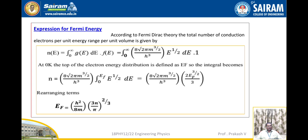At 0 Kelvin, the top of the electron energy distribution is defined as E_F. The integral becomes n equal to 8√2 π m^(3/2) divided by h³, integrated from 0 to E_F. After simplification and rearranging the terms, we get E_F equal to h² by 8m into (3n/π)^(2/3). This is the expression for Fermi energy.